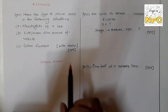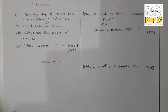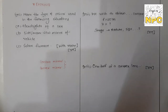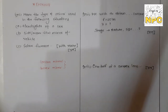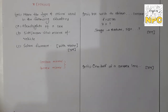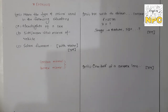Second situation is the side view mirror of a vehicle. Generally, we use a convex mirror for vehicle side mirrors. There are two reasons: first, through a convex mirror, the image is erect, virtual, and diminished, so you can see all objects behind in a small mirror. Second, the convex mirror provides a wider field of view, covering the maximum area behind the vehicle. For these two reasons, we use a convex mirror in vehicles.